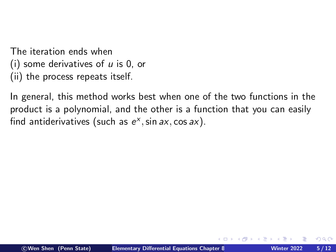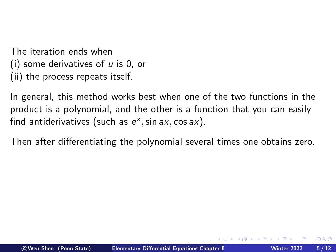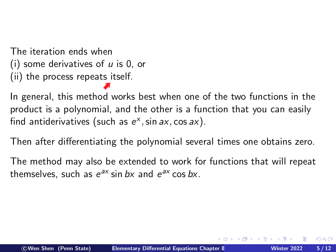For this method to work well, the other function should have integrals that are very easily found. Good examples are the exponential function, the sine function, and the cosine function. The second termination situation is when the process repeats itself — you end up with an integral that is the same as, or a scalar multiple of, what you started with. Typical examples of functions whose derivatives repeat periodically are exponential, sine, and cosine, which makes this useful for computing exponential times sine and exponential times cosine.